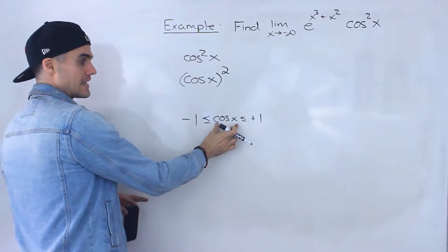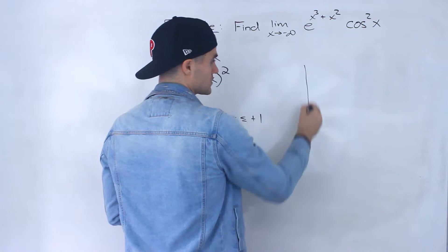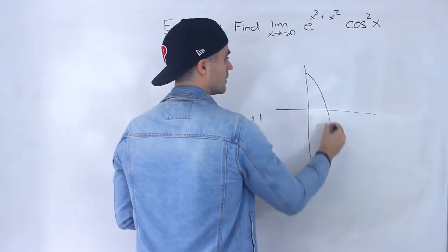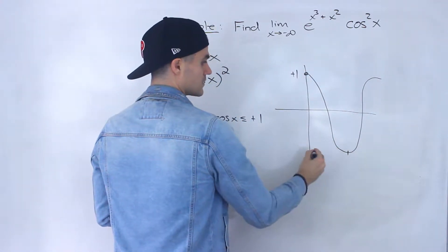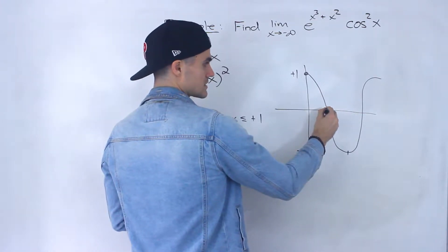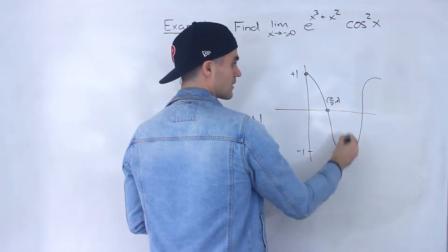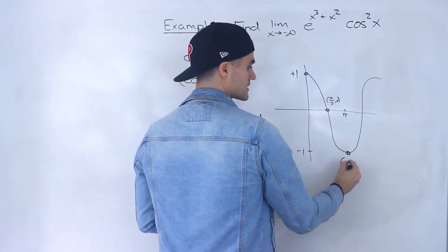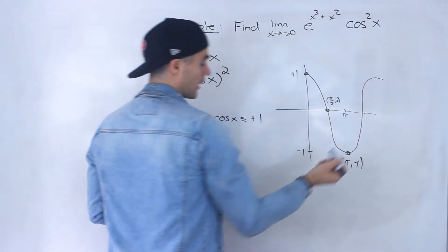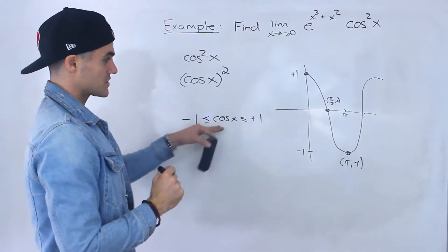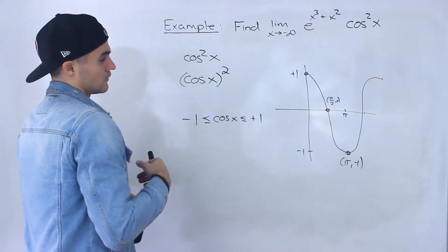So what's going to happen if we take this and square it? If I draw out cos x, just to give you a visual — it starts at a maximum of 1, then over here it's going to be at negative 1. This coordinate is pi over 2 and 0, this coordinate happens at x equals pi, it's pi and negative 1, and so on. This is going to be at 3 pi over 2, and this at 2 pi. That's just cos x — ranging between negative 1 and positive 1.